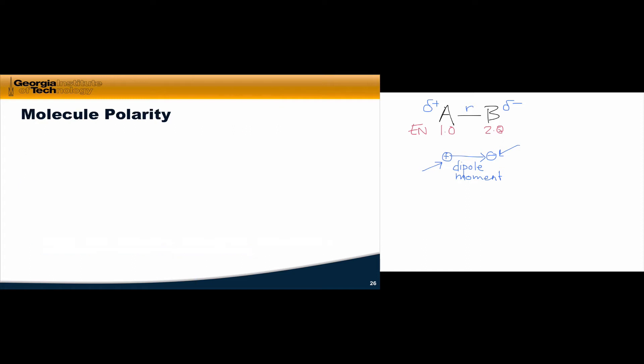Thus far, we've talked only about bond dipoles, the bond dipole between a pair of atoms A and B that are directly connected. But how can we think about the polarity of a molecule as a whole? Well, if we imagine a molecule with a particular geometry, let's take the tetrahedral geometry, for example.